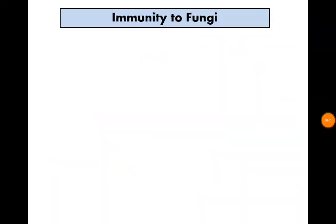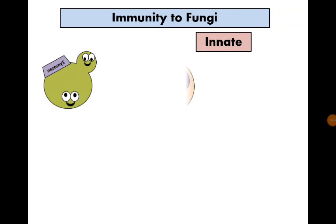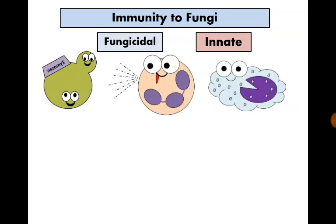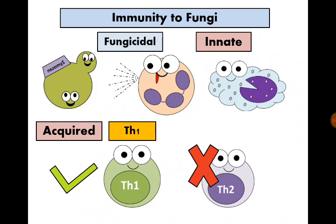What about immunity to fungi? It usually relies mainly on neutrophils that secrete fungicides, and macrophages also have a role. For the acquired response, like intracellular bacteria, T-helper-1 response is protective, while T-helper-2 response is counter-protective.